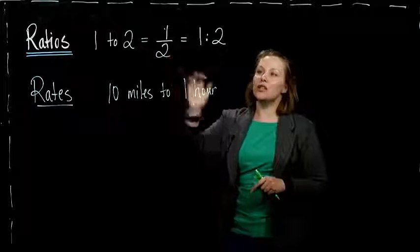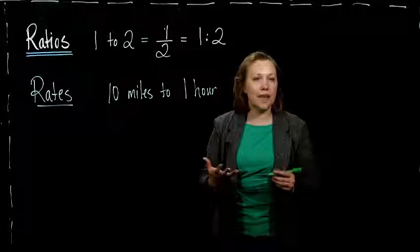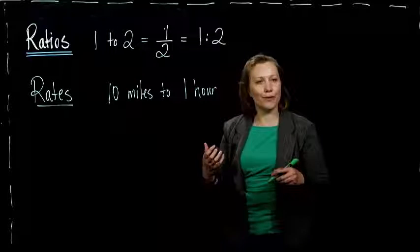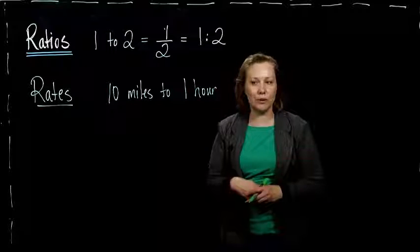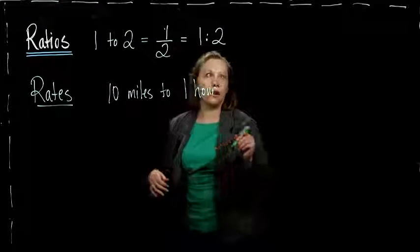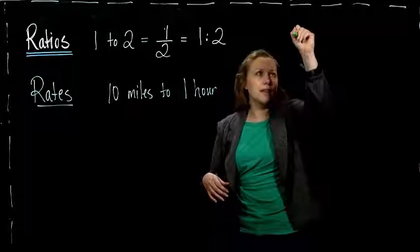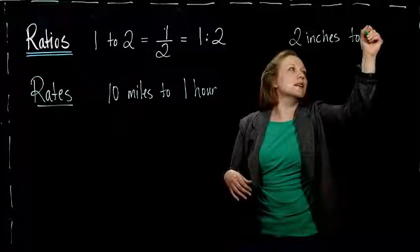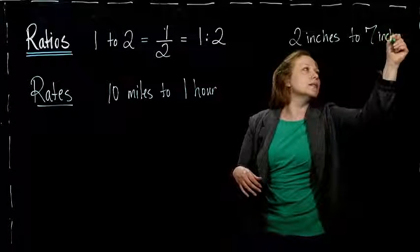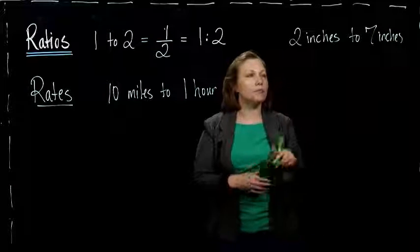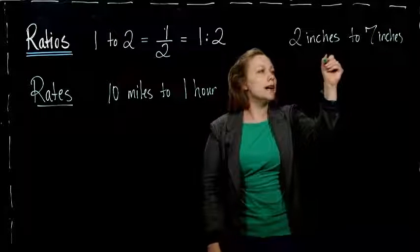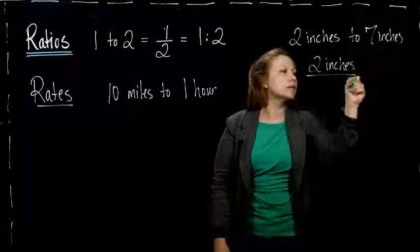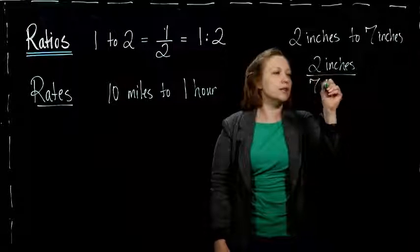In ratios, because the units are the same, they actually cancel out and give us what we would say is unitless. For example, if I gave you 2 inches to 7 inches, we could write it as a fraction: 2 inches over 7 inches.